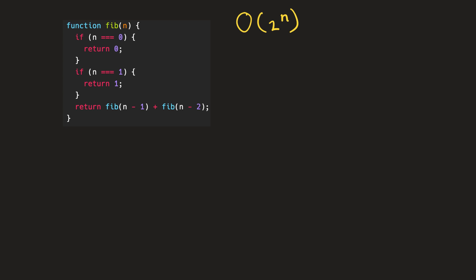So let's imagine that we pass the number four to our fib function. So at this point, four is our value for n. After we call this function, we'll end up at our first if block — this if block just returns zero if n equals zero, and then we move on to a second if block which just returns one if n equals one. Both of these if blocks are base cases, because with recursive functions we need a base case so that the function doesn't continue to call itself after we're finished.